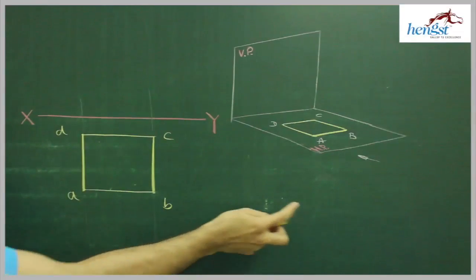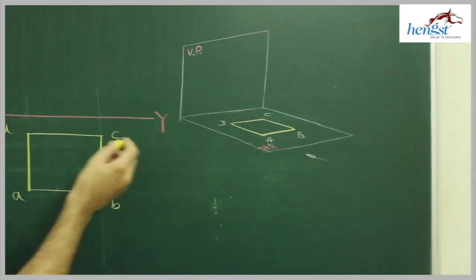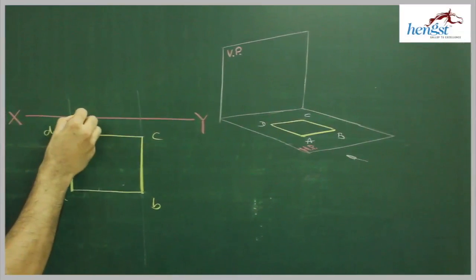And in front of you, when you see from the front, when you see from this side, you will see only a line. So in front view, you will see only a line.